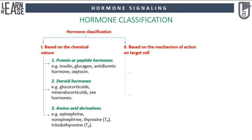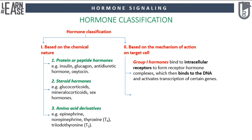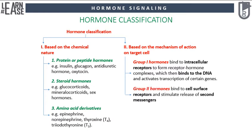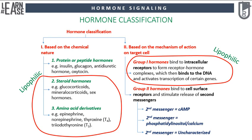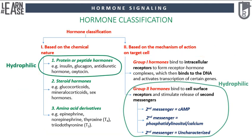Functionally, hormones are classified as Group 1 hormones and Group 2 hormones. Group 1 hormones bind to intracellular receptors to form receptor-hormone complexes, which then bind to the DNA and activate transcription of certain genes. Group 2 hormones bind to cell surface receptors and stimulate release of second messengers. Group 2 hormones are further differentiated into three groups based on the type of second messenger released: those that trigger cyclic AMP, those that trigger phosphatidylinositol or calcium, and those that signal through less characterized pathways. All steroid and amino acid derivative hormones fall in Group 1 and are lipophilic, whereas protein or peptide hormones are hydrophilic and fall in Group 2.